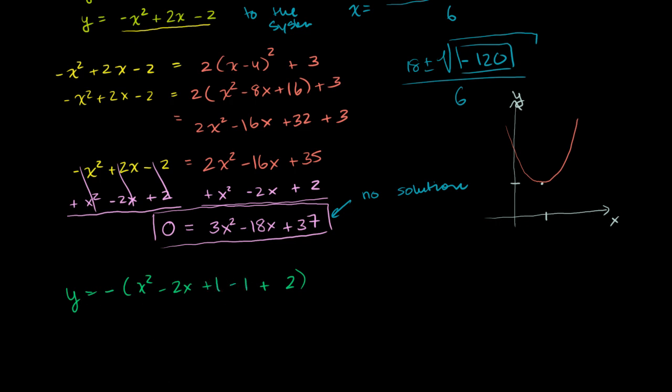And then this part right over here, we can rewrite as x minus 1 squared. So it becomes negative x minus 1 squared. Let me just do it one step at a time. I don't want to skip steps. Negative x minus 1 squared minus 1 plus 2, so that's plus 1 out here.